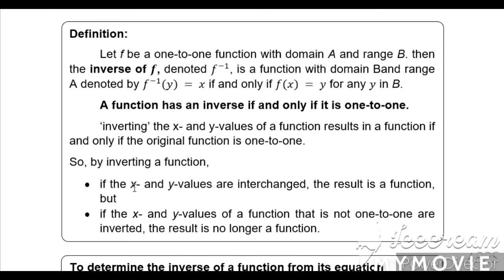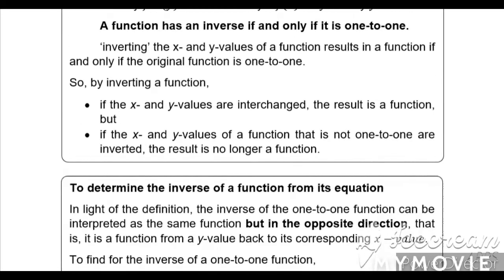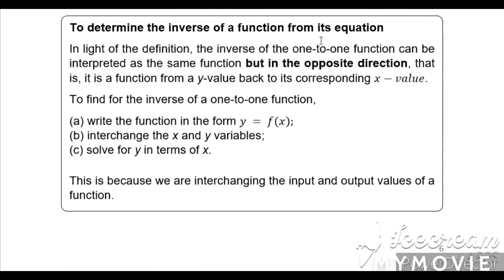To determine the inverse of a function from its equation: the inverse of a one-to-one function can be interpreted as the same function but in the opposite direction — a function from a y value back to its corresponding x value. To find the inverse: step a, write the function in the form y = f(x); step b, interchange the x and y variables; step c, solve for y in terms of x. This is because we are interchanging the input and output values of a function.